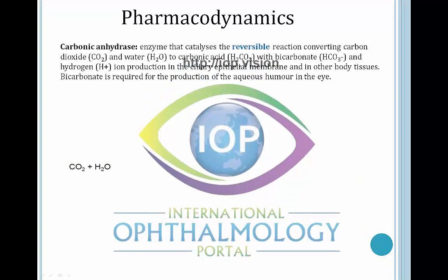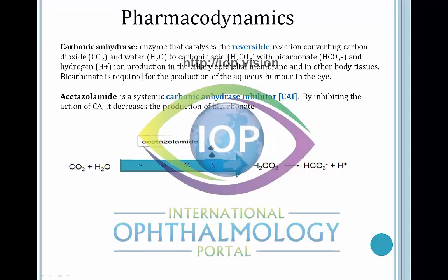We all know that carbonic anhydrase is an enzyme that catalyzes the reversible reaction converting carbon dioxide and water into carbonic acid, with the further formation of bicarbonate and hydrogen ions in the epithelial membrane — but this process occurs through all body tissues. It just so happens that bicarbonate is required for the production of aqueous humor in the eye. And so when you use acetazolamide, which is a systemic carbonic anhydrase inhibitor, the act of inhibiting carbonic anhydrase decreases the production of bicarbonate.